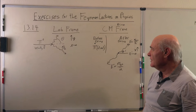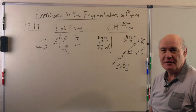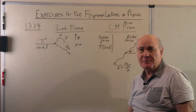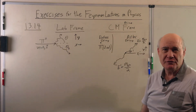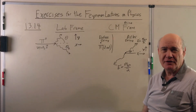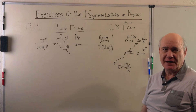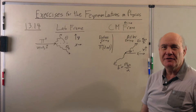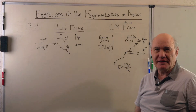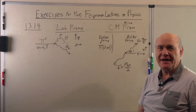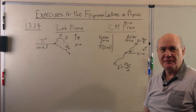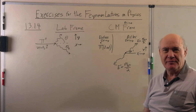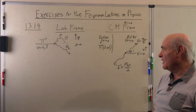In this problem 13-14, we're going to talk about a decay of a pi-zero meson. A neutral pi-zero meson decays into two photons. It usually takes about 10 to the minus 16 seconds. This is a purely electromagnetic decay. A strong interaction decay would take about 10 to the minus 23 seconds, and a weak interaction decay would be about 10 to the minus 8 seconds.